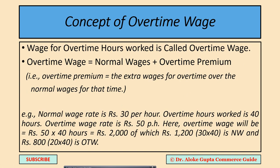Wages for overtime hours worked is called overtime wages. There is a difference between normal wage rate and overtime wage rate — overtime wages must be greater than or higher than the normal wage rate. For example, if the normal wage rate is 30 per hour, then the overtime wage rate may be 35, 40, 45, or 50 — whatever it is, it must be more than 30.